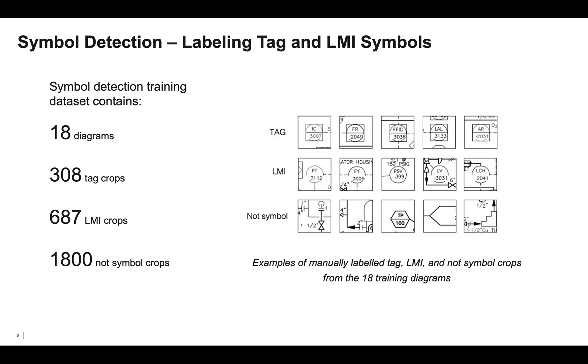So here I'll explain how we labeled the diagrams for the symbol detection step. In order to train and validate a machine learning model to detect and classify tags and LMIs, we created a data set of symbol crops from a collection of 18 P&IDs. Tags and LMIs across the diagrams had a consistent size and fit within a 100 by 100 pixel window. We labeled all of the tags and LMIs across the 18 diagrams using these bounding boxes, resulting in 308 tag crops and 687 LMI crops. Additionally, we took 100 random crops that did not contain a tag or LMI symbol from each diagram, resulting in 1800 not symbol crops.